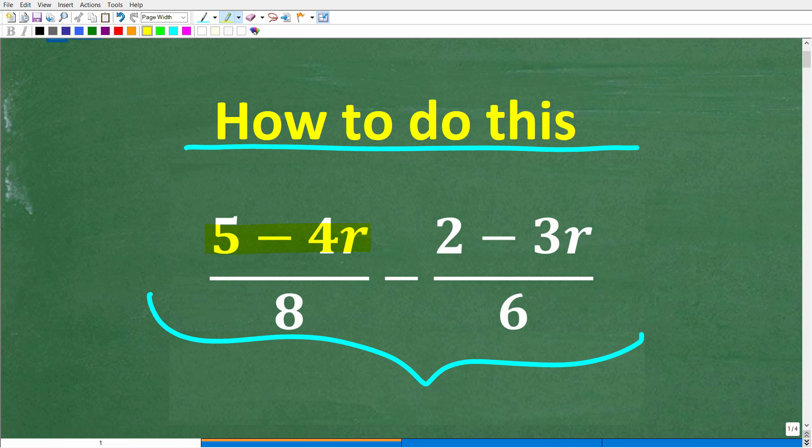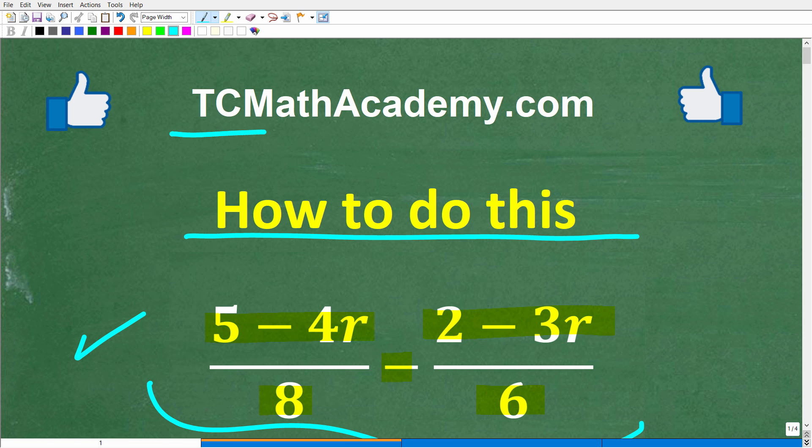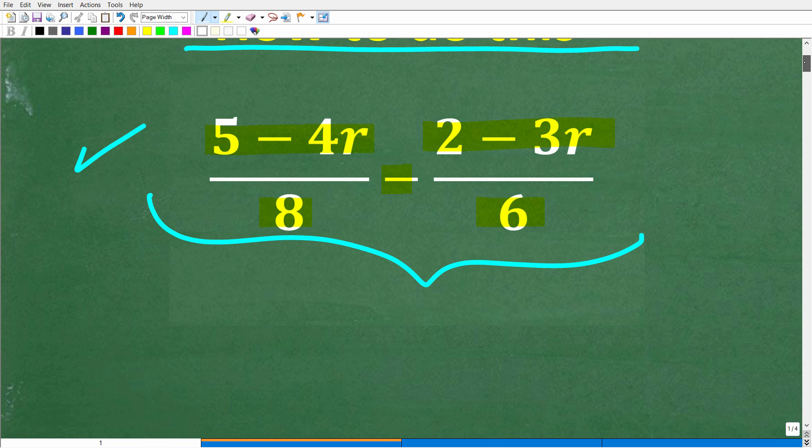Let's take a look at the problem. We have 5 minus 4R over 8 minus 2 minus 3R over 6. Now if you could figure this out, put your answer in the comment section. I'll show you the correct answer in just one second, then of course I'll walk through exactly how to solve this problem step by step. Also, if you need assistance with mathematics, check out my math help program at tcmathacademy.com. You can find a link to that in the description below. And if this video helps you out, or if you just enjoy this content, make sure to like and subscribe as that definitely helps me out.